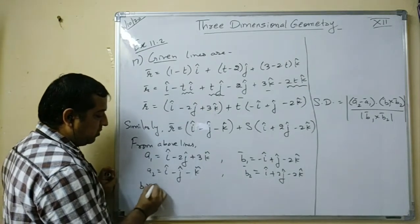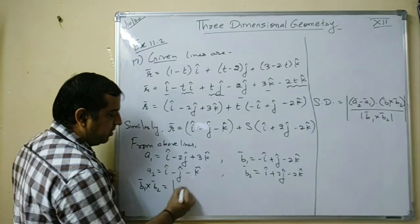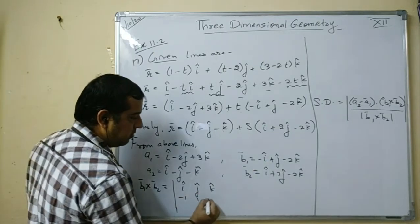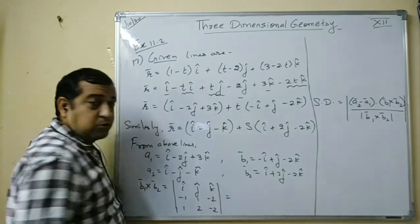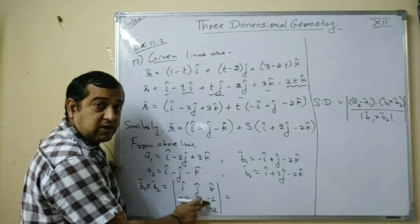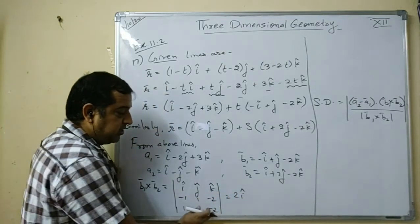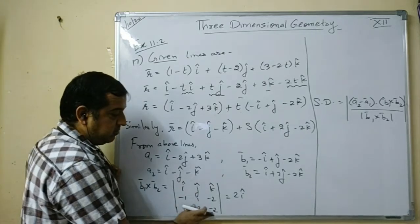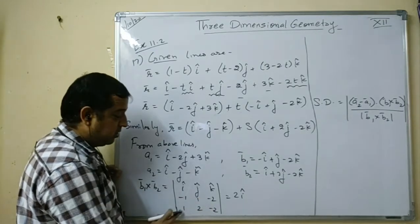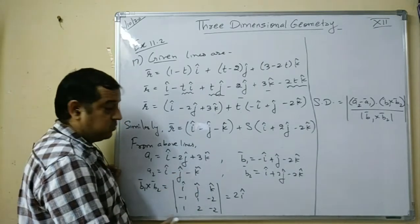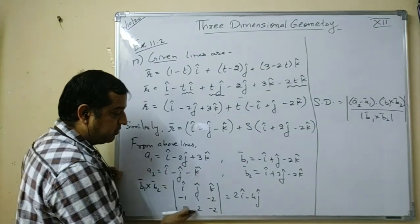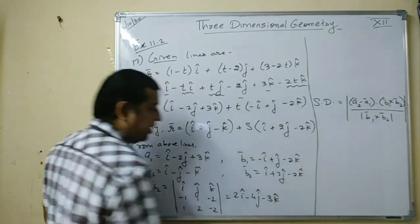Now we find b1 × b2 using the determinant |i  j  k / -1  1  -2 / 1  2  -2|. Expanding: i·(1×(-2) - (-2)×2) = i·(-2 + 4) = 2i-cap. For j: -((-1×(-2)) - (-2×1)) = -(2 + 2) = -4j-cap. For k: ((-1×2) - (1×1)) = -2 - 1 = -3k-cap. So b1 × b2 = 2i - 4j - 3k.